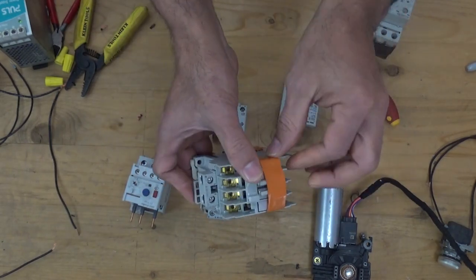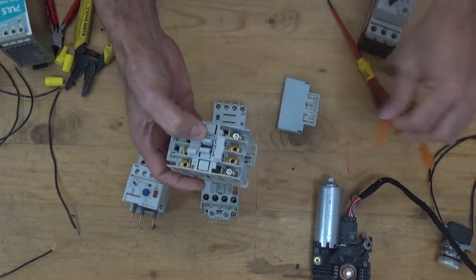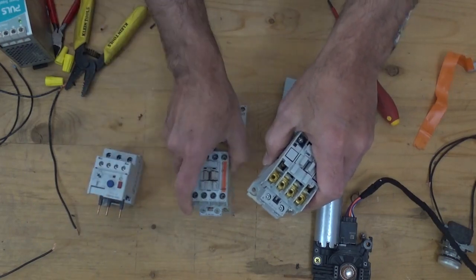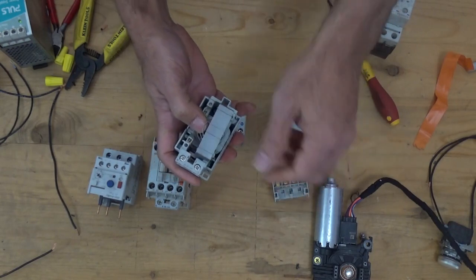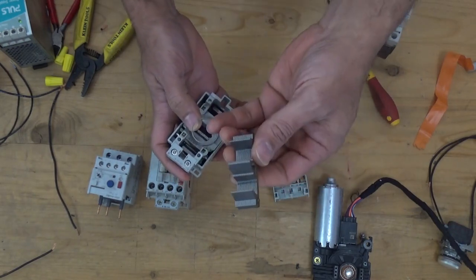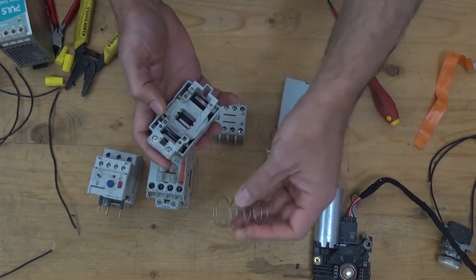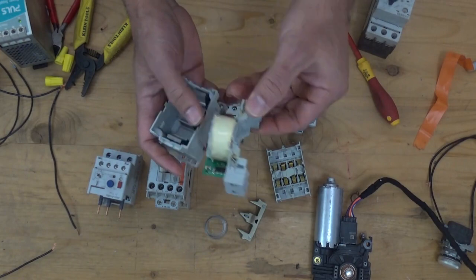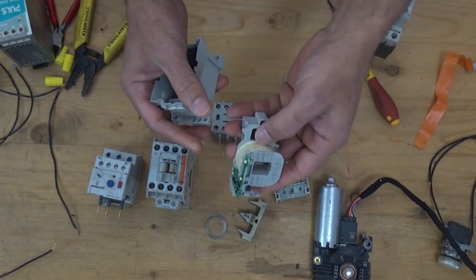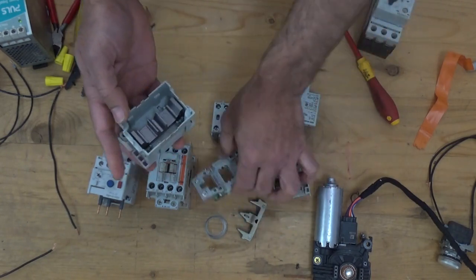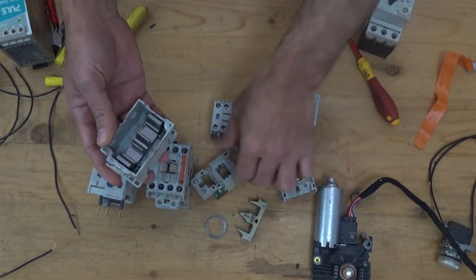This is the magnetic contactor that I disassembled to show everything in more detail. The coil, this is the plunger, the return spring. This coil is an electromagnet. There's a bunch of wire. I'm going to put it back.